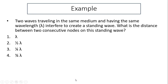Another example: Two waves traveling in the same medium with the same wavelength interfere to create a standing wave. What is the distance between two consecutive nodes on this standing wave? The distance between consecutive nodes is half of a wavelength, so the answer is option two.